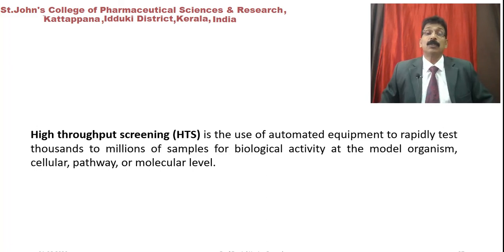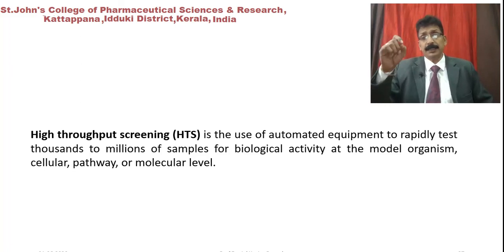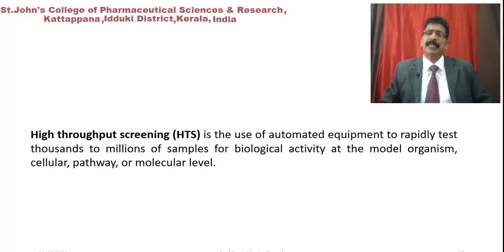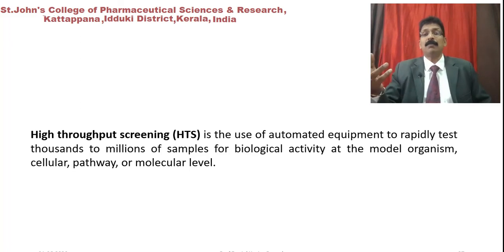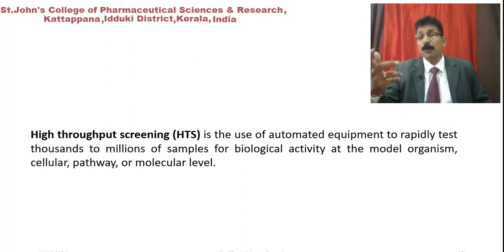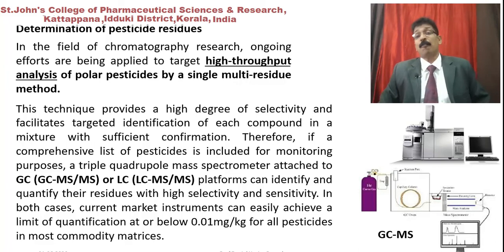The Average Residue Limit (ARL) in mg of pesticide per kg of plant material is calculated based on the Maximum Acceptable Daily Intake (ADI) recommended by WHO. The formula is: ARL = (ADI × X × 60) / MDI, where ADI is the maximum acceptable daily intake of pesticide in mg/kg body weight, X is the extraction factor determining the transition rate of pesticide from plant material into the dosage form, and MDI is the mean daily intake of medicinal plant product.